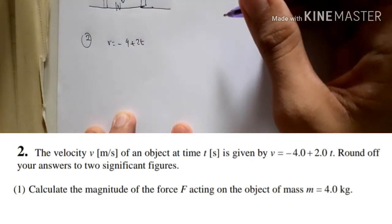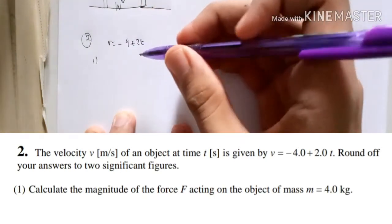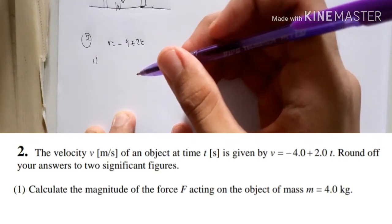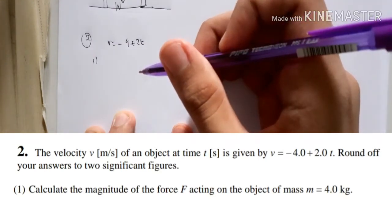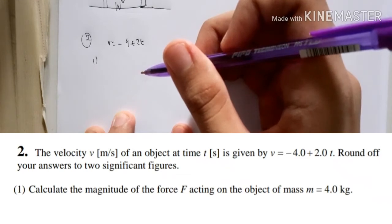Round off your answer to two significant figures. Okay, number one, calculate the magnitude of the force f acting on the object of mass m equals 4 kg.